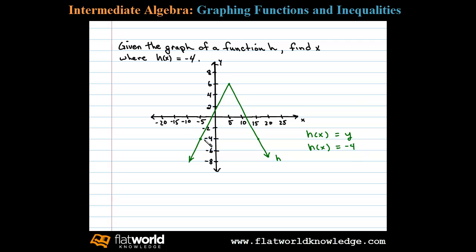To do this we'll look at the graph. When y is negative 4, we can see there are two points on the graph with that property. Reading from the graph, we can see when x is negative 5, y is negative 4, and also when x is 15, y is equal to negative 4. So to answer the question, x equals negative 5 or x equals 15.